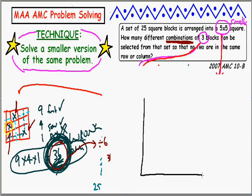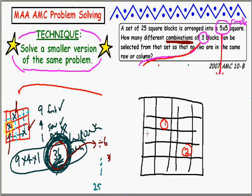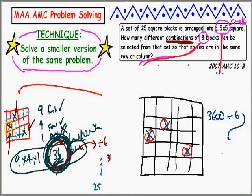So the technique we used for the 5 by 5 grid - choosing three blocks labeled first, second, third - is also off by a factor of 6. There were actually 6 possible orders those three X's could have come in, so the answer of 3,600 is off by a factor of 6. The true answer is 3,600 divided by 6, which is 600 ways to select three blocks in a 5 by 5 grid so that no two are in the same row or column.